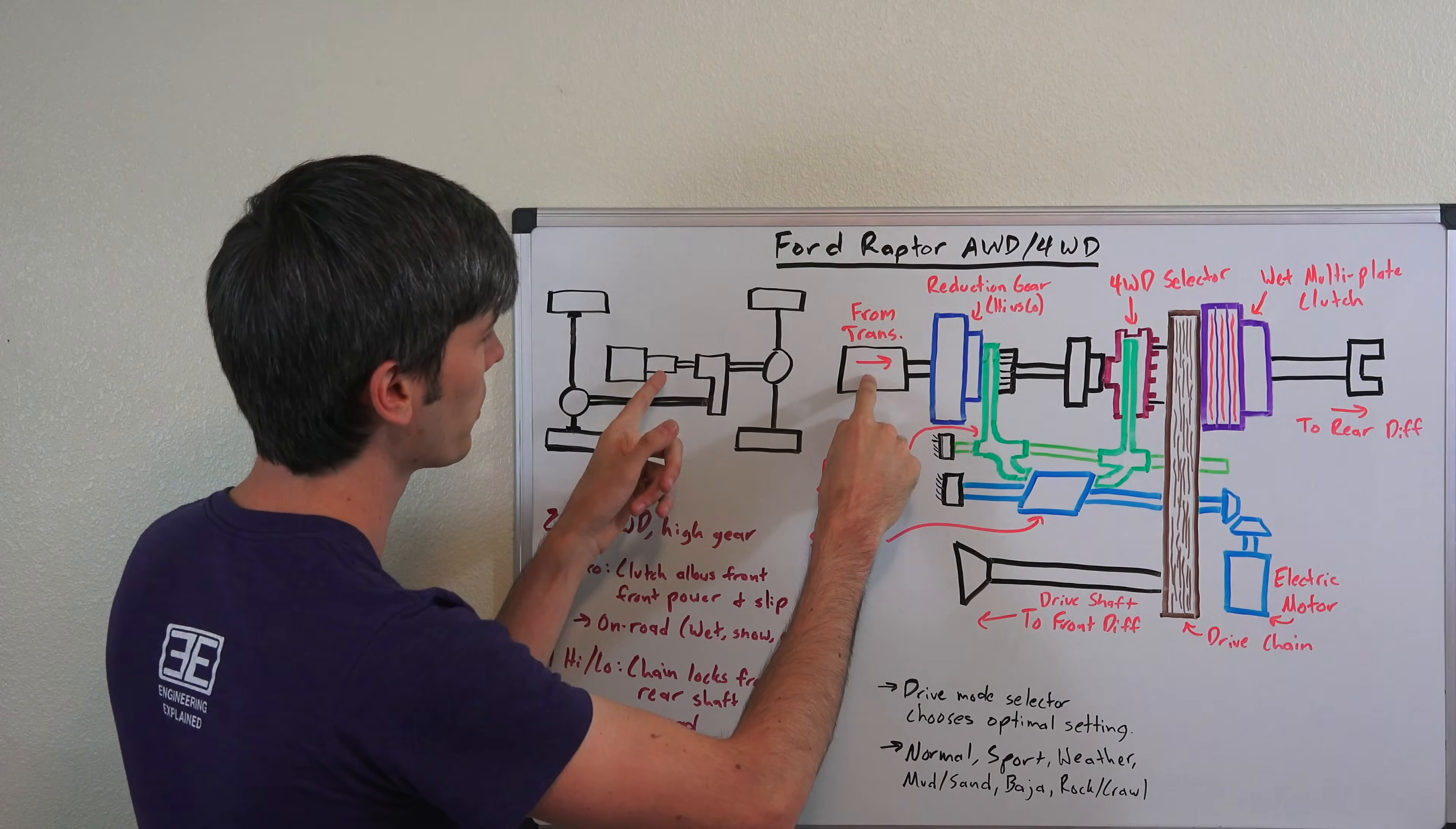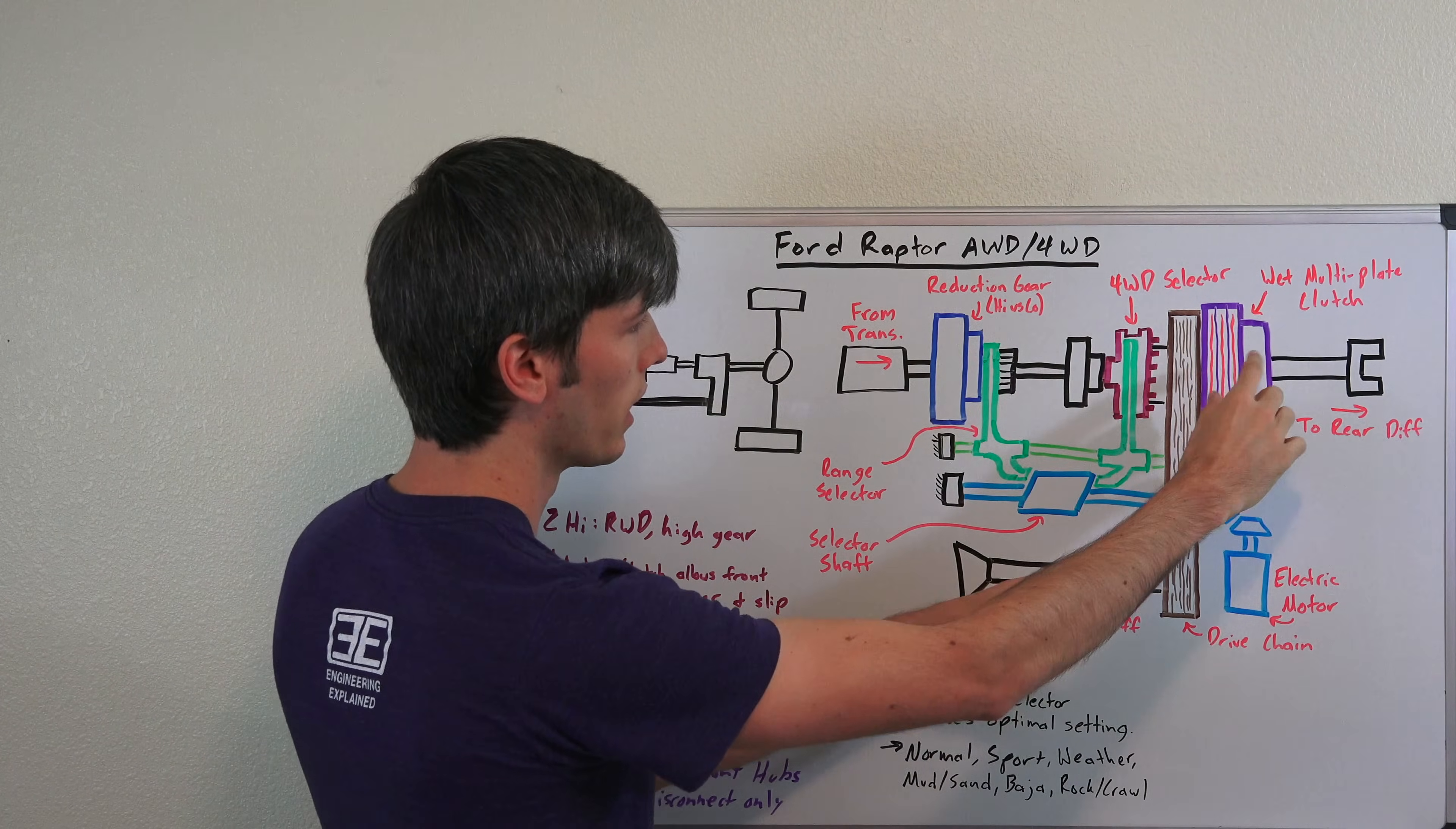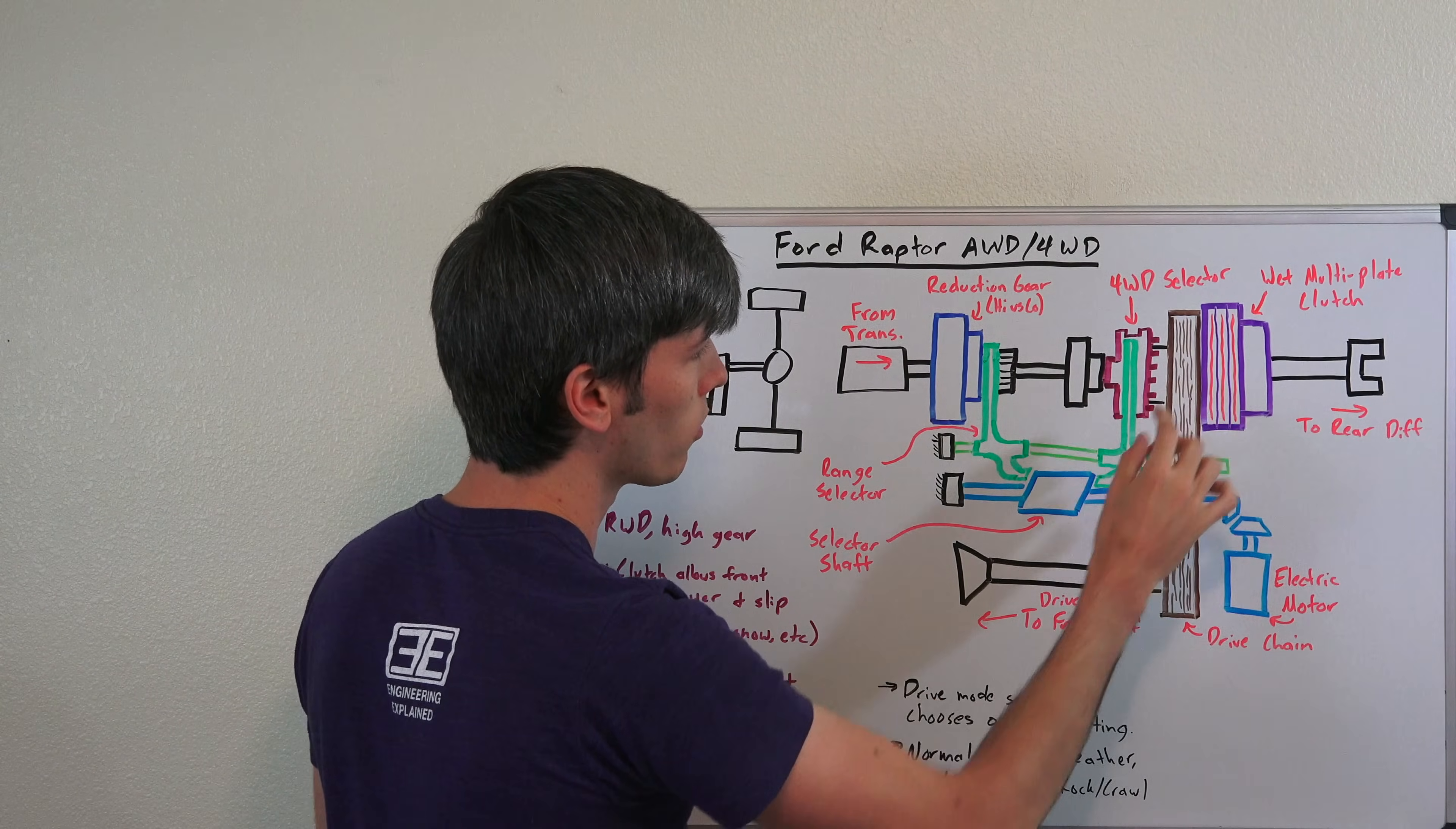So you've got your engine power coming from the transmission in here that's sending that through a reduction gear so whether you're in four high or four low which is switched using this range selector right here. Power continues along this shaft to the four-wheel drive selector so that will put you in four high or four low that just basically combines these two shafts so that they now rotate at the same speed. This chain is connected to both this shaft and this shaft so if you lock them together both of these will rotate together then you have a wet multi-plate clutch which is connecting between this shaft right here and this chain right here.